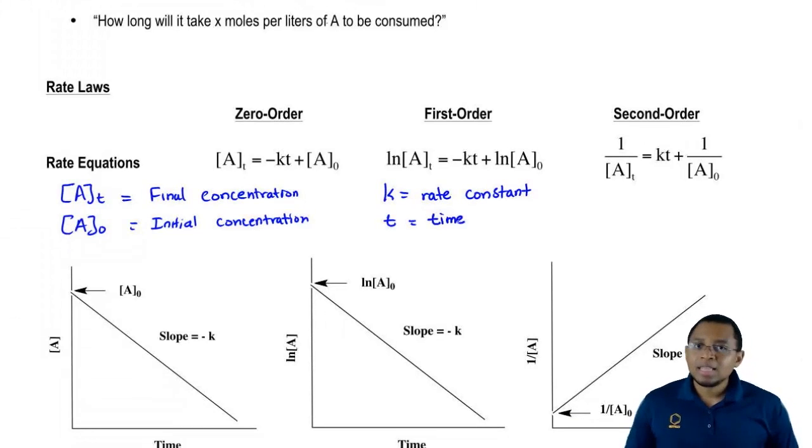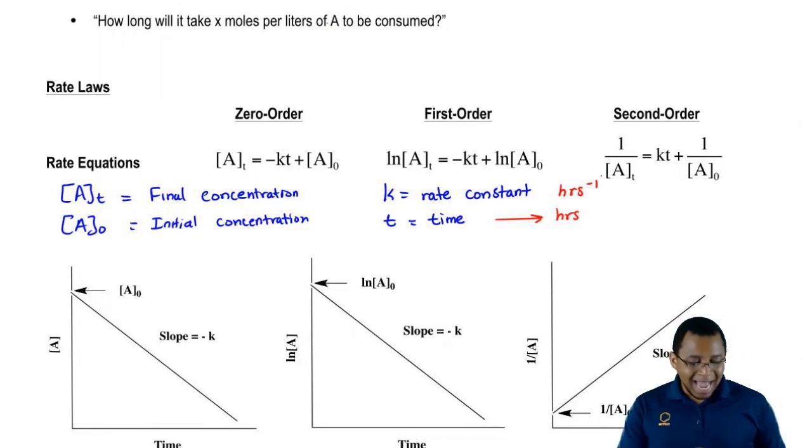One thing we should realize is that when it comes to K and T, they have to have the same units of time. What does that really mean? That means let's say our time was in hours. K and T have to have the same units of time, so K would have to be hours inverse. Always keep an eye out for that. Make sure they're both in the same units of time. If not, you have to convert one so that they both match.